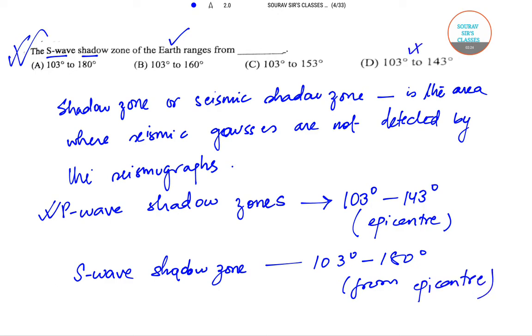So this would have been the correct answer provided it was P-wave shadow zone. However, the correct answer here is option A. Moving on.